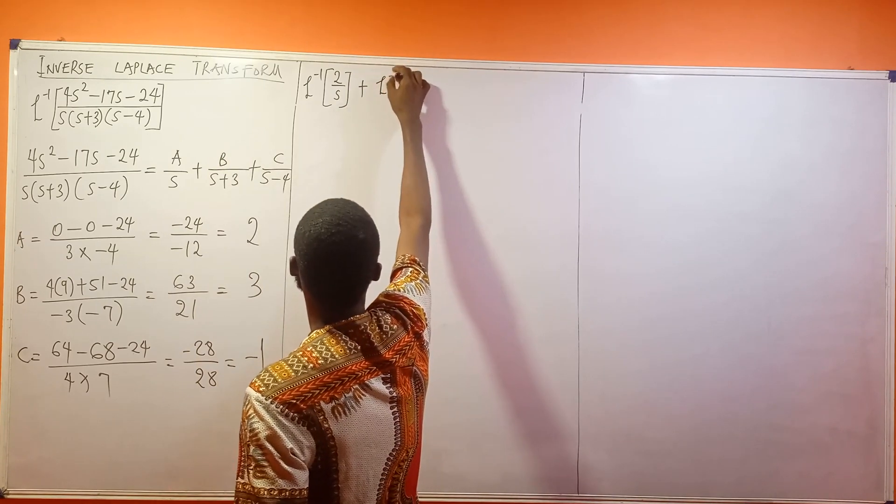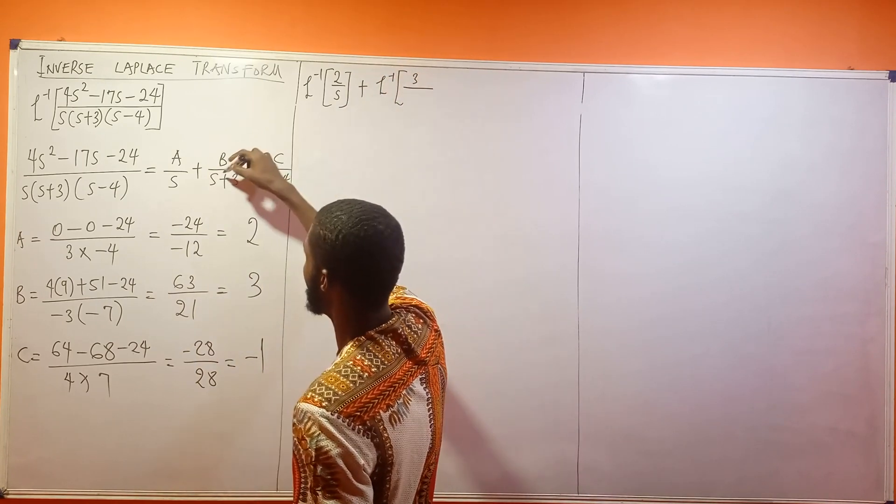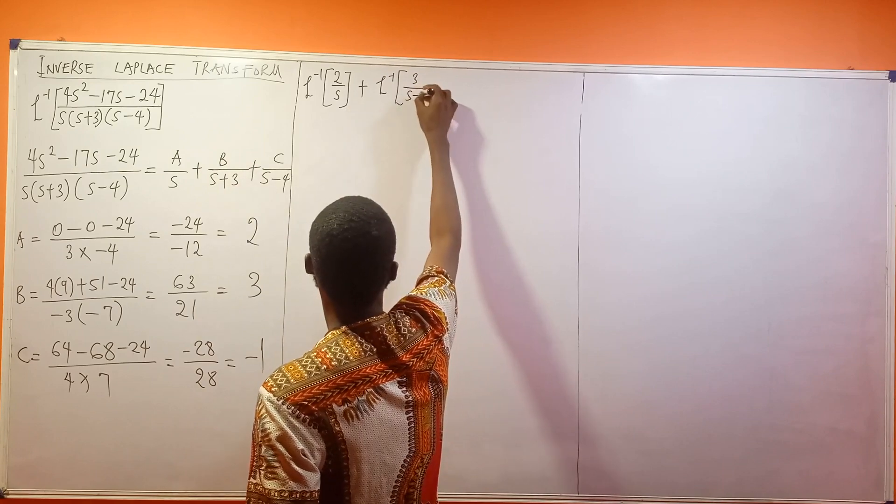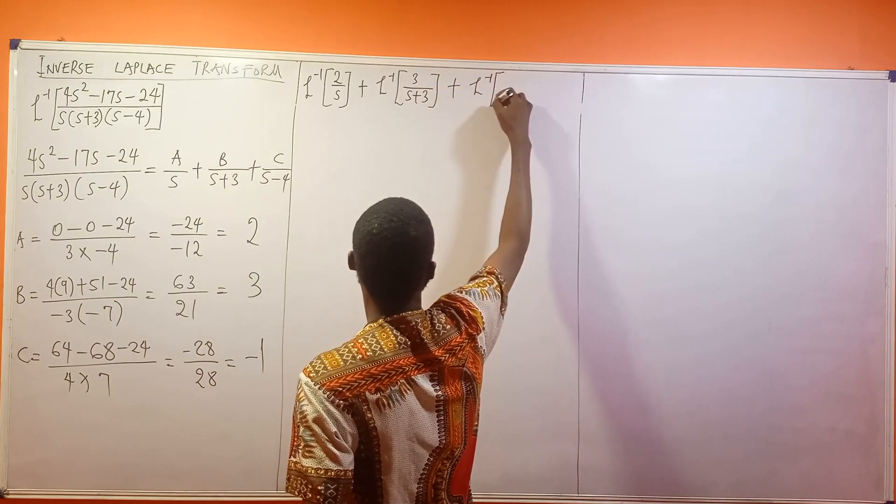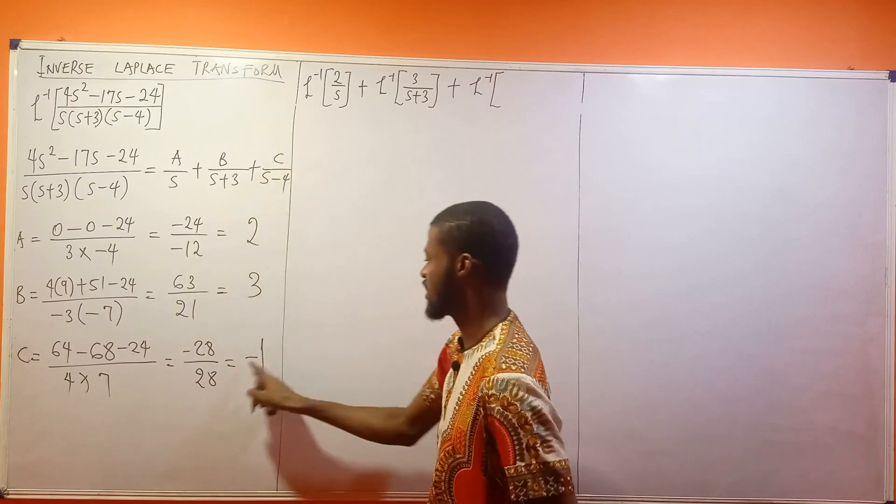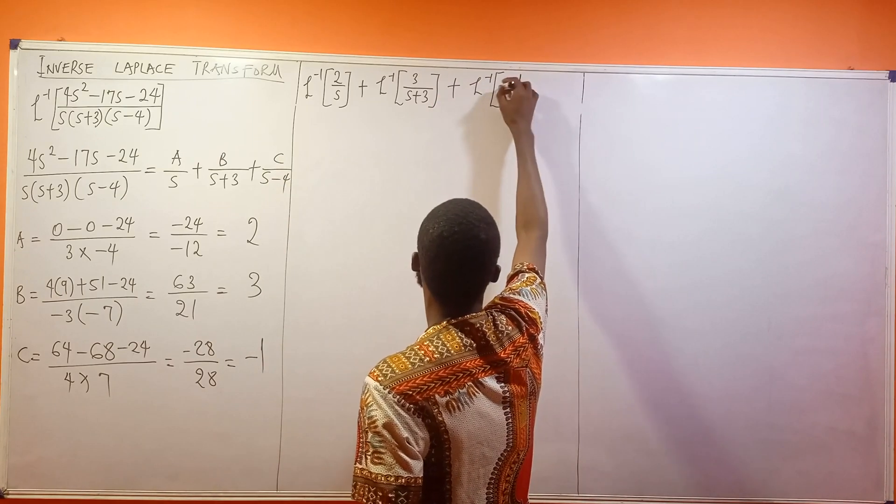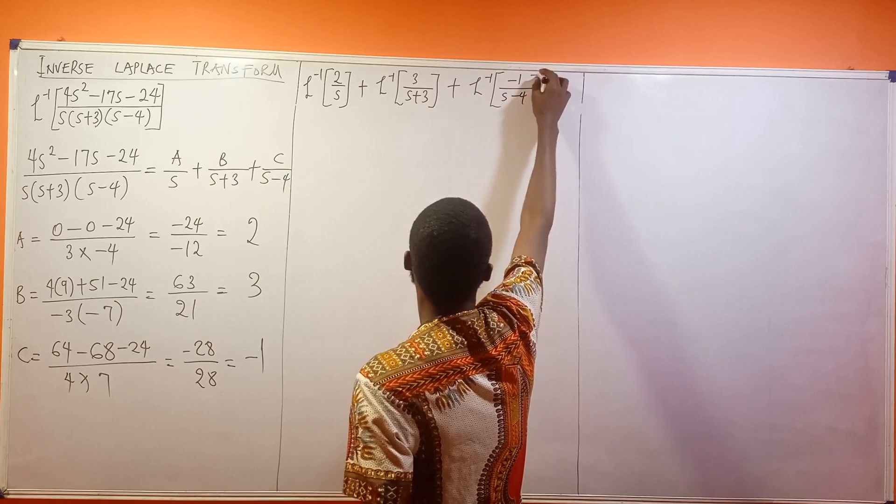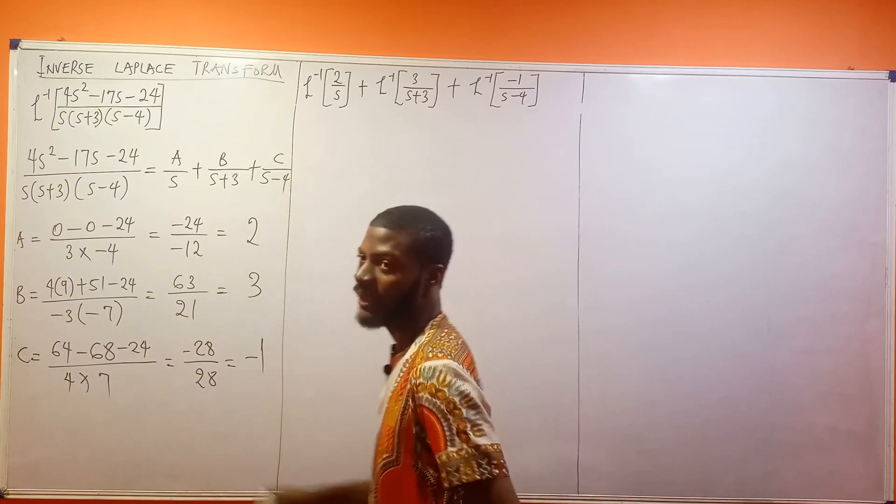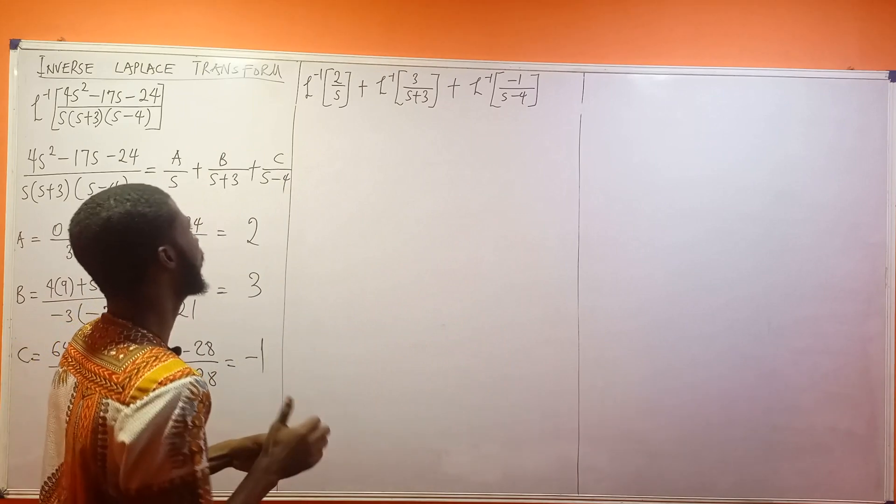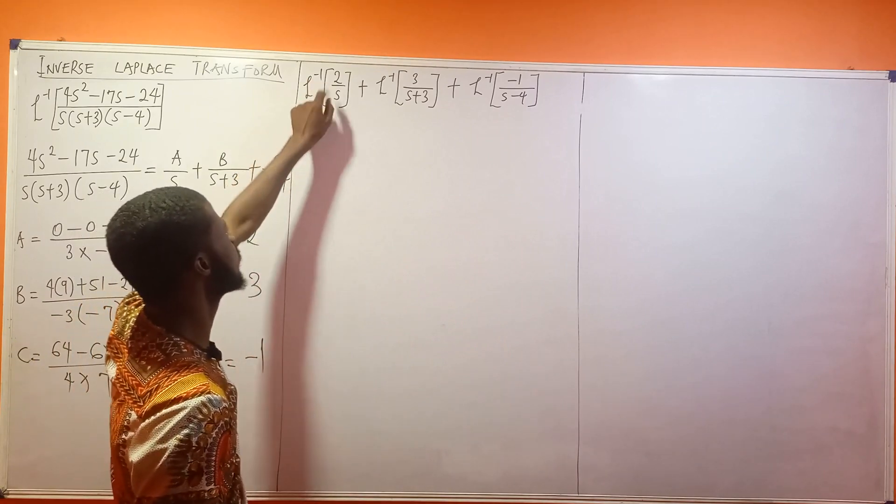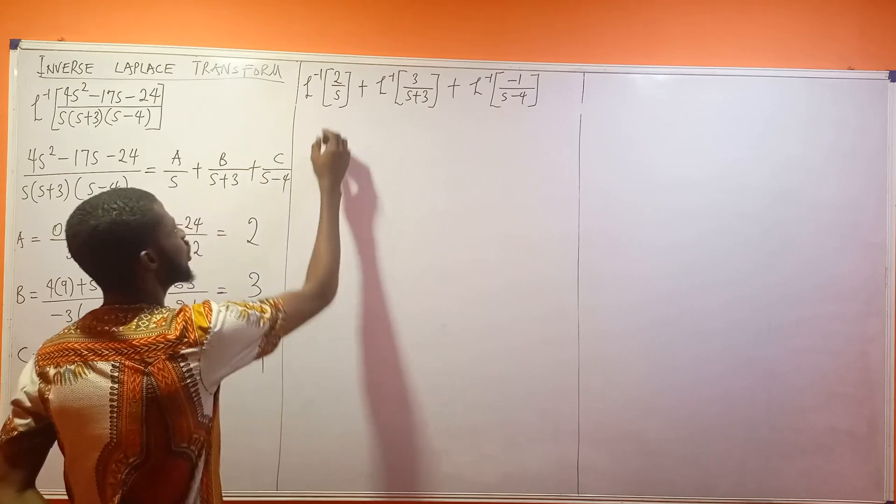Then plus B, what was our B? 3. So this is the inverse Laplace of 3 divided by s plus 3. Then plus inverse Laplace of, what is our C? C is minus 1, so minus 1 over s minus 4.